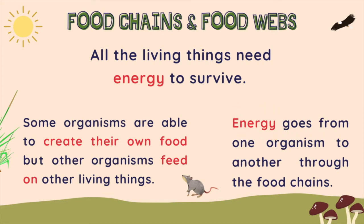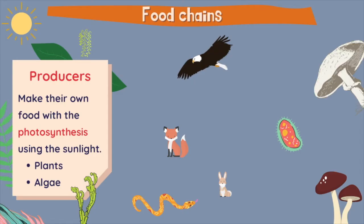Energy goes from one organism to another through food chains, and every food chain always starts with the sun. Let's have a look at the elements of food chains. First, we have producers. Producers make their own food with photosynthesis using sunlight. These producers are plants and algae from the Protist kingdom.